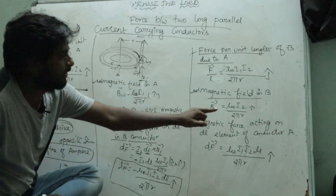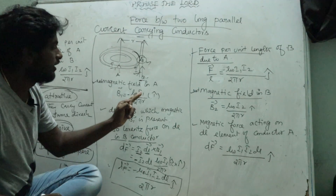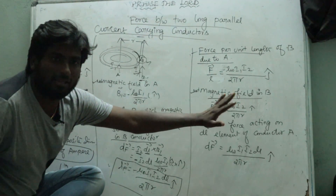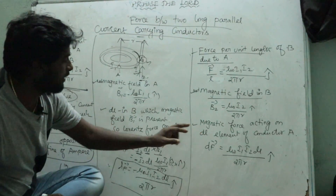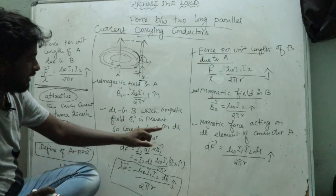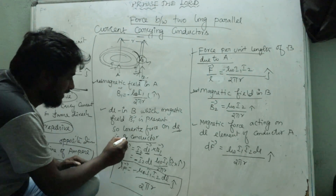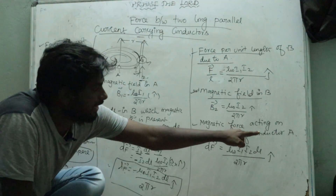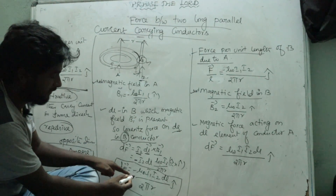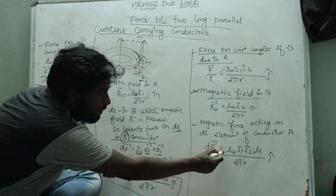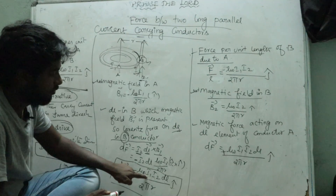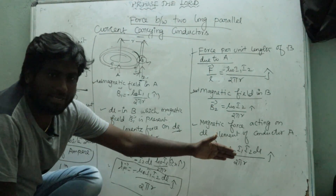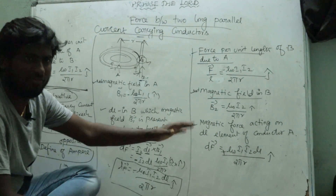Here B1 and B2 are the magnetic field vectors, with minus and plus signs. We have μ₀, I1, and I2, with 2πR as a common factor. The magnetic Lorentz force dF on element DL in conductor B is: dF = −(μ₀ I1 I2 DL / 2πR) ĵ.